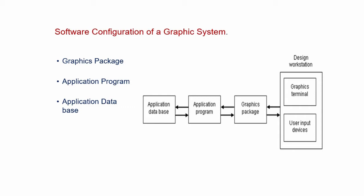These three main modules play an important role in the software configuration of a graphic system. The block diagram shows that the application database, application program, and graphics package are interconnected. This graphics software configuration is also interconnected with the design workstation, such as the graphics terminal, user input devices, and memory devices.